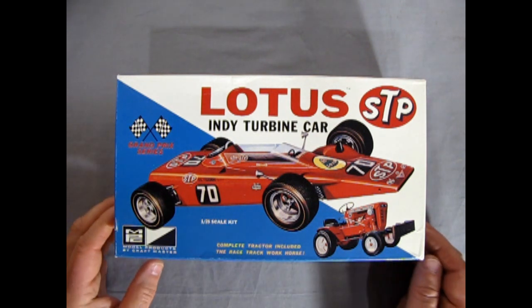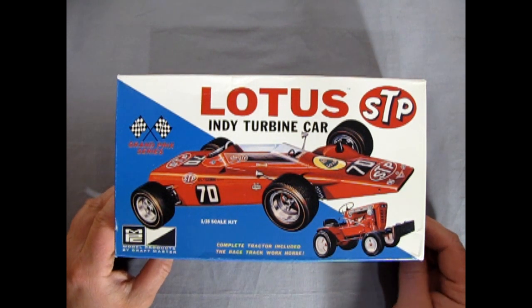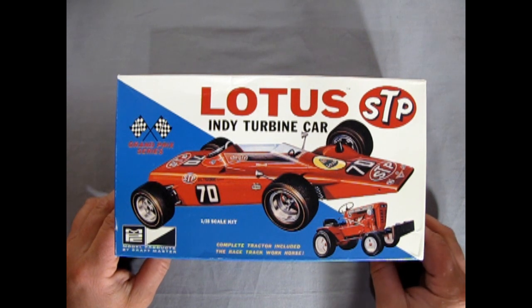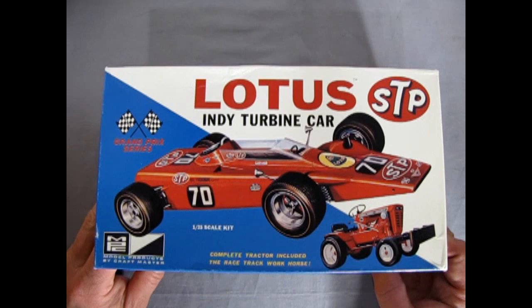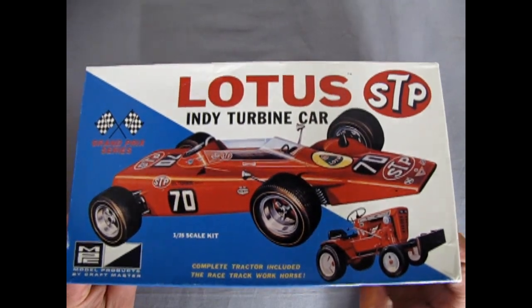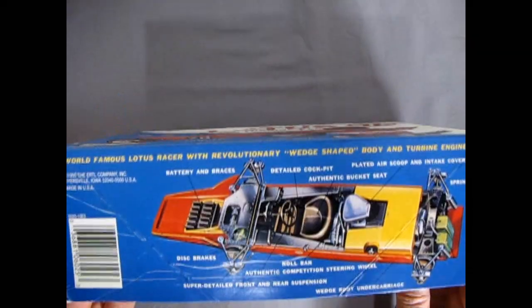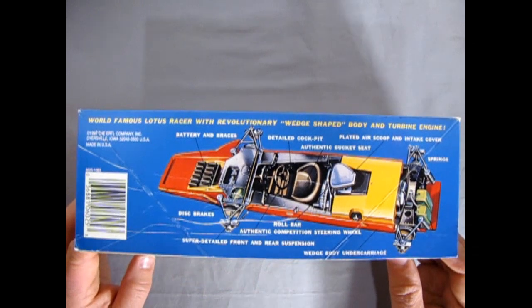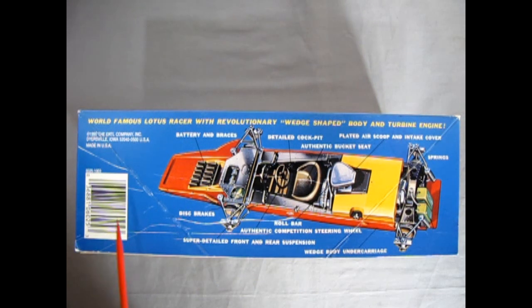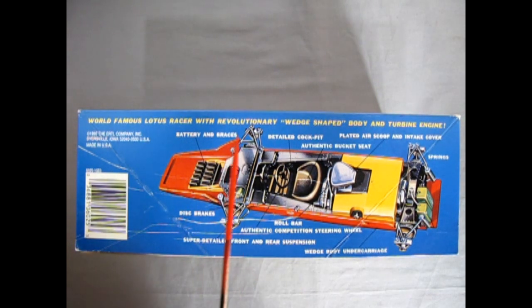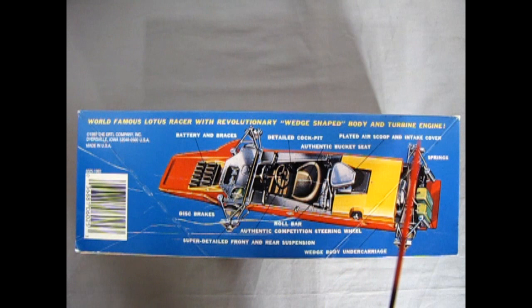So taking a look at this amazing box art, this of course is a reproduction from 1995 under the Ertl company but you can see the excellent detail on this. Now as we turn the box on its side you can see exactly all the amazing technological features of this model kit. The world-famous Lotus Racer with revolutionary wedge-shaped body and turbine engine.